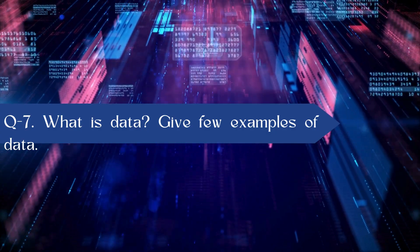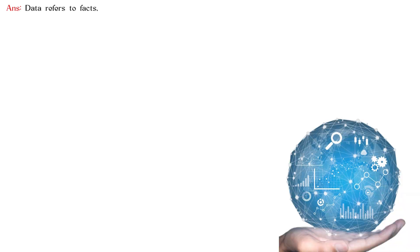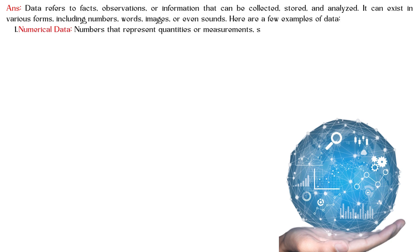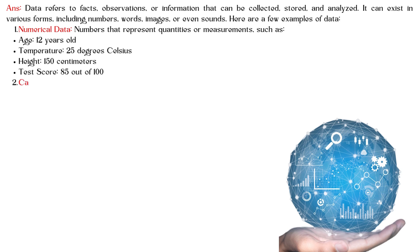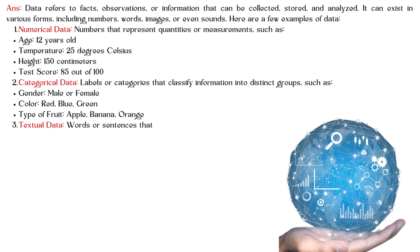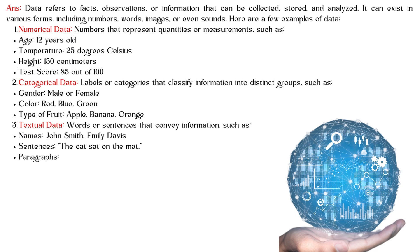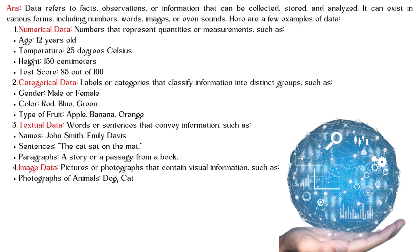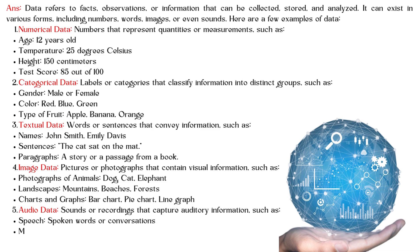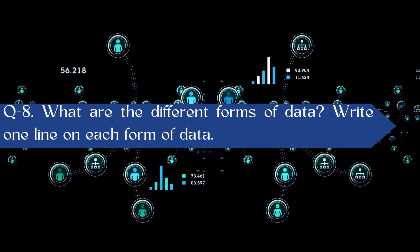What is data? Give a few examples. Data refers to facts, observations, or information that can be collected, stored, and analyzed. It can exist in various forms including numbers, words, images, or sounds. Examples include: numerical data — numbers that represent quantities or measurements; categorical data — labels or categories that classify information into distinct groups; textual data — words or sentences that convey information; image data — pictures or photographs; and audio data — sounds or recordings.